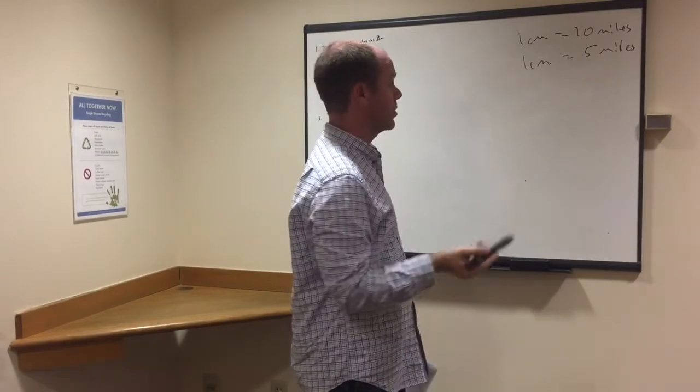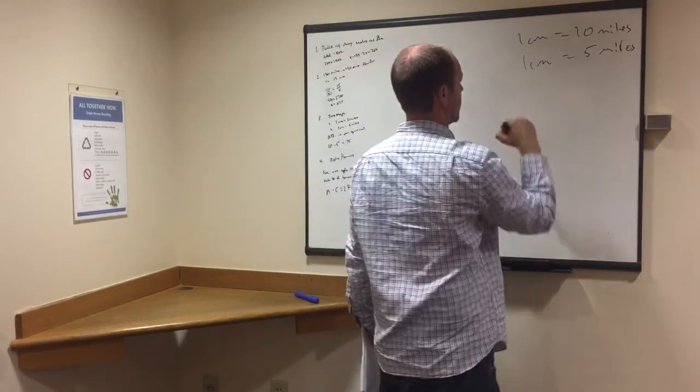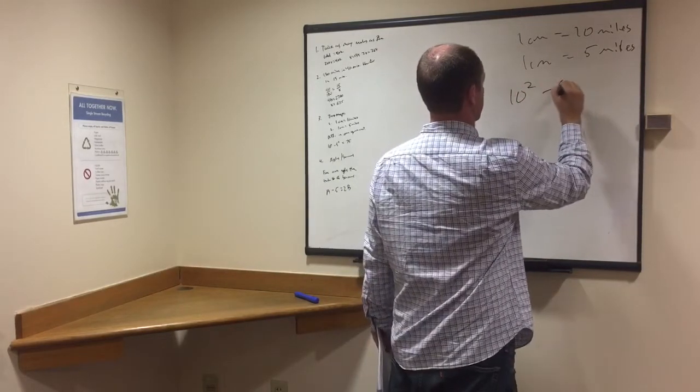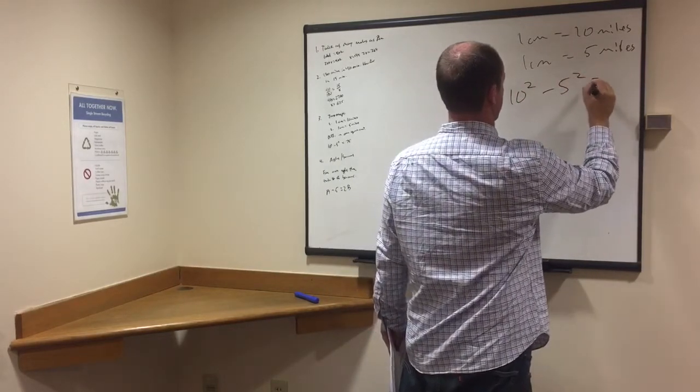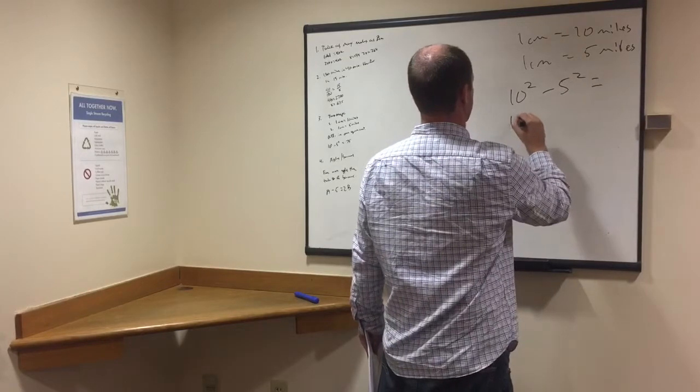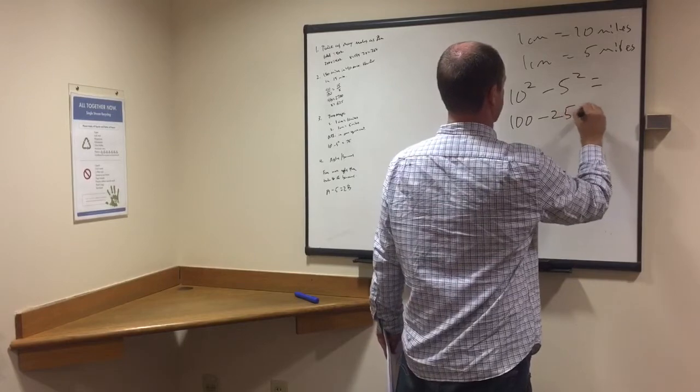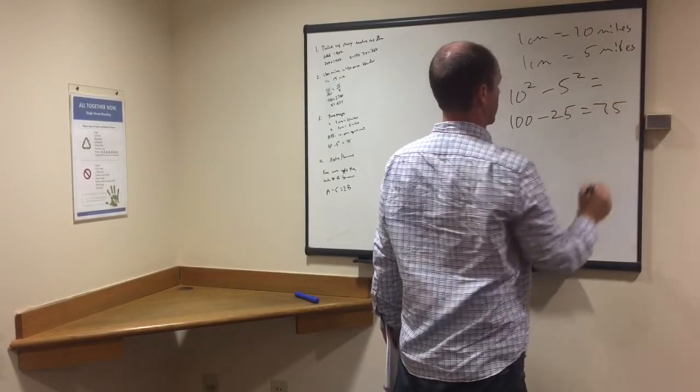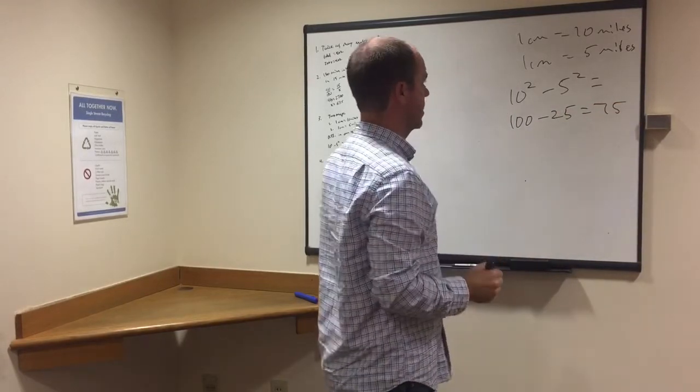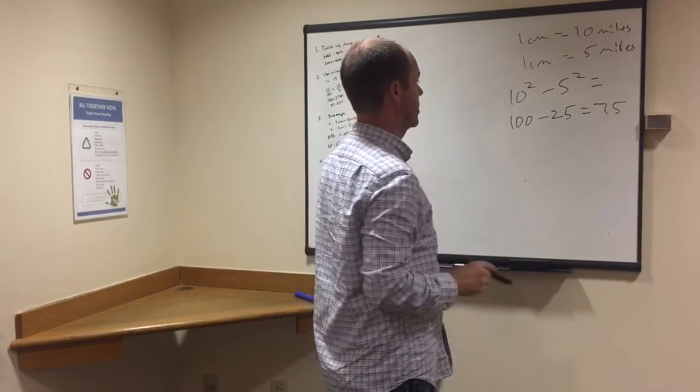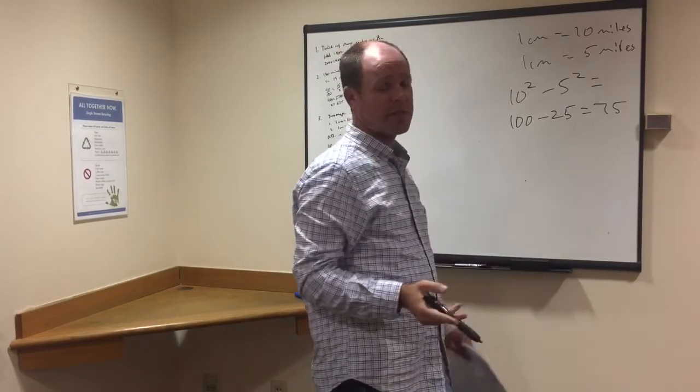Alright, so you just need to know how to set this up. So all you really do, pretty simple, is you square both of them and subtract them. Alright, so you have 10 squared minus 5 squared equals what? Then we have 100, 10 squared is 100 minus 5 squared, 25. And we end up with 75. And so that means that the difference in one square centimeter is 75 miles.